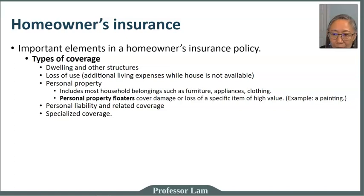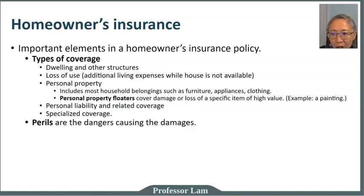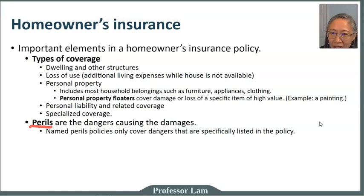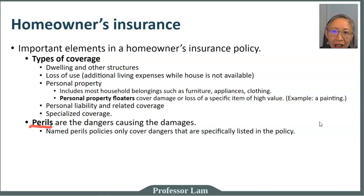The first four — the dwelling itself, loss of use, personal property, and personal liability — are the most typical coverage types. The next major element is the event; the term used in the insurance industry for events is perils. Named peril policies only cover damages that are specifically listed — if the damage is caused by something not on the list, the policy will not cover it.